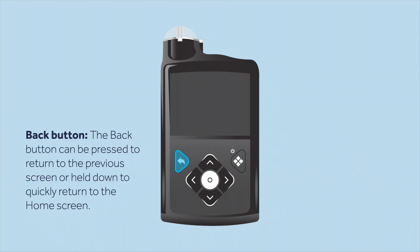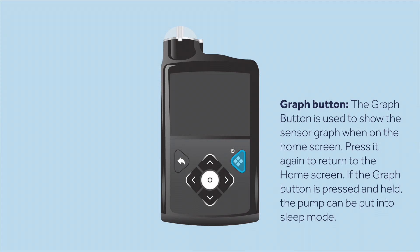The back button goes to the previous screen, or it can be held down to go straight to the home screen. The graph button, when pressed once, shows the sensor graph if you are using continuous glucose monitoring. Press it again to return to the home screen. Press and hold to put the pump into sleep mode.